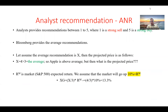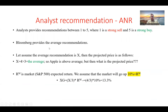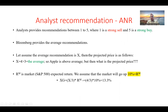In Bloomberg, five is a strong buy. Every analyst gives a number — JP Morgan might give two, Morgan Stanley four, others five or three, and so on. The average analyst recommendation is what we analyze. To convert from Yahoo Finance to Bloomberg, all you have to do is calculate six minus the Yahoo Finance ANR number.